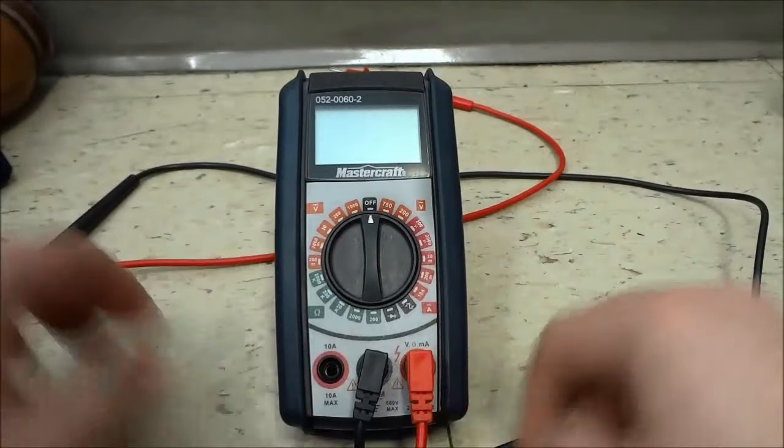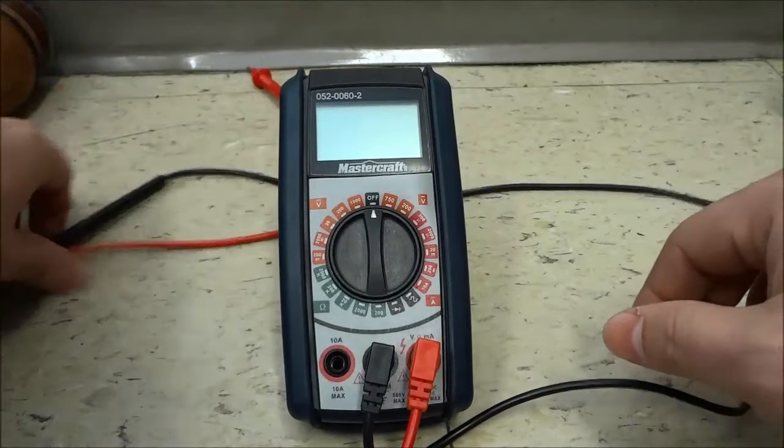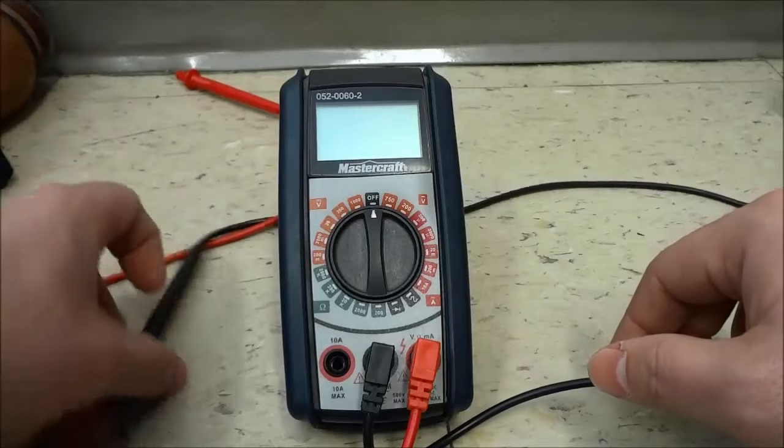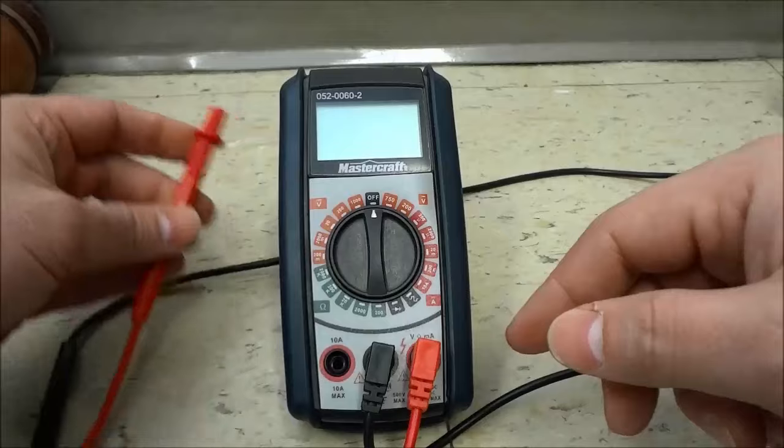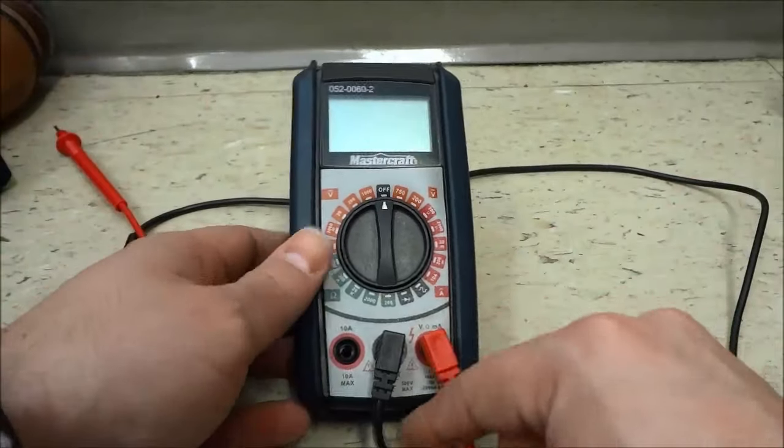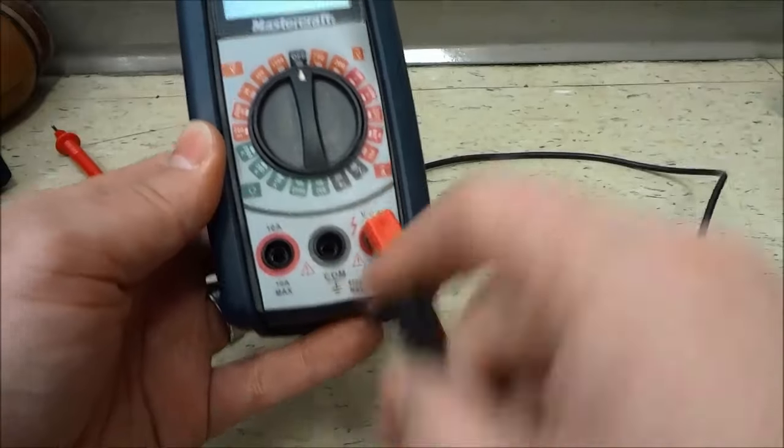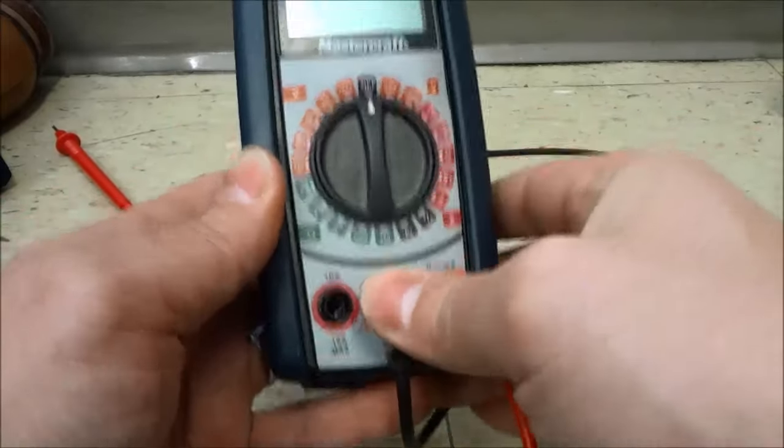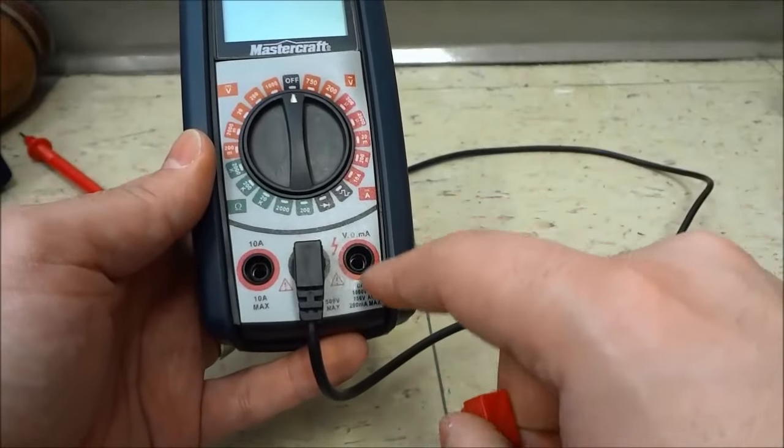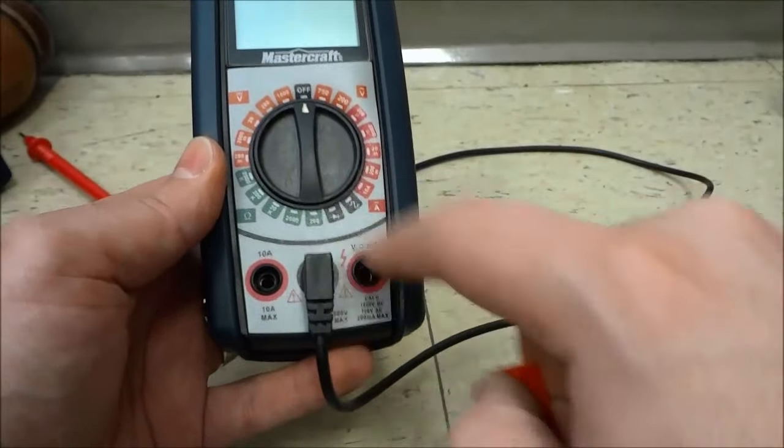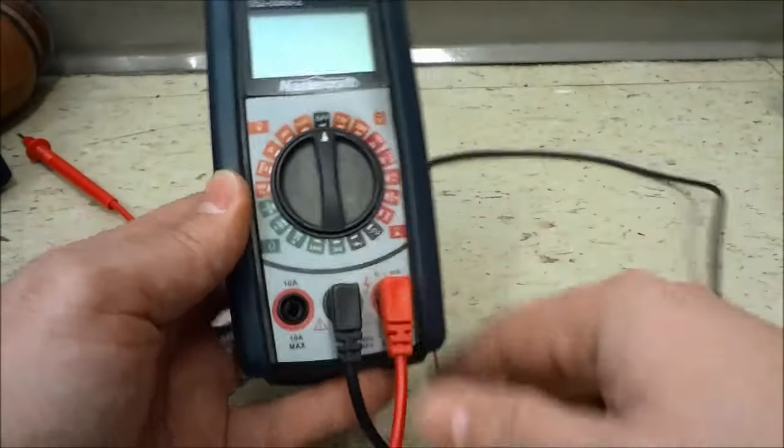You can see it comes with two probes. One of the wires is black with a black probe at the end, and one is red with a red probe. The black probe goes in the middle section and plugs in there. You can plug the red probe into either of these two sections, either of these two inputs, depending on what you are measuring.